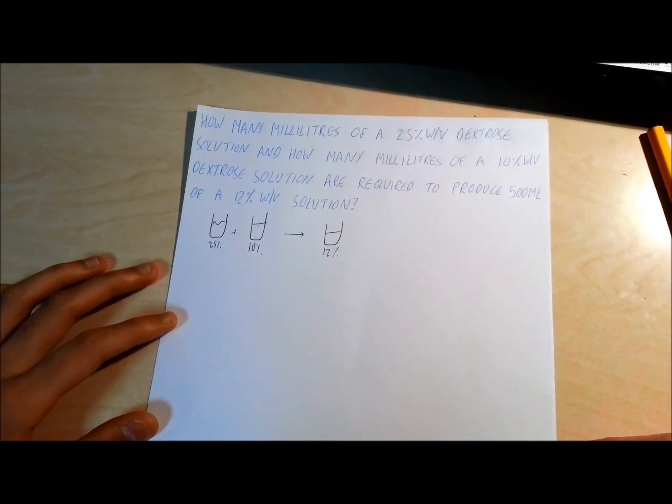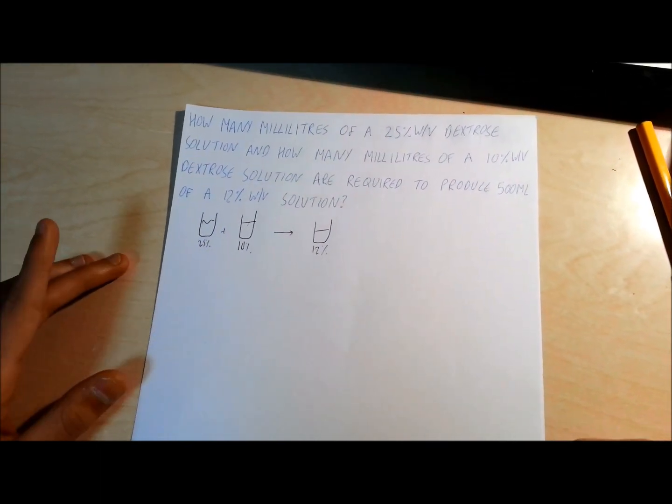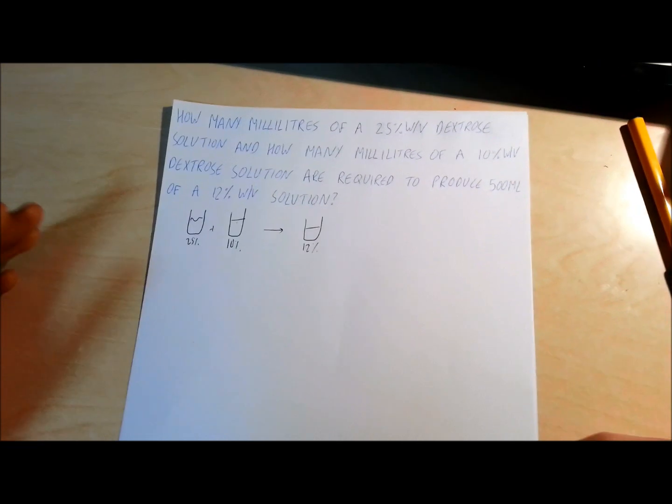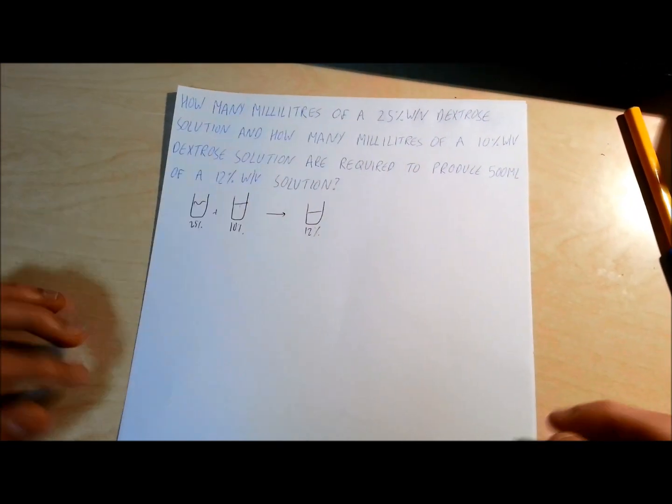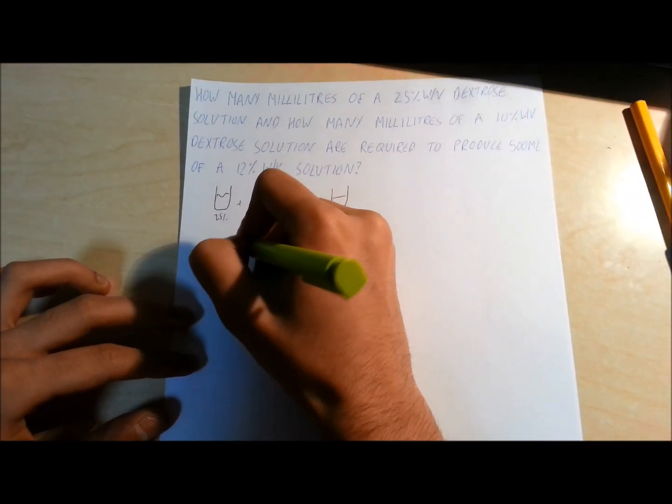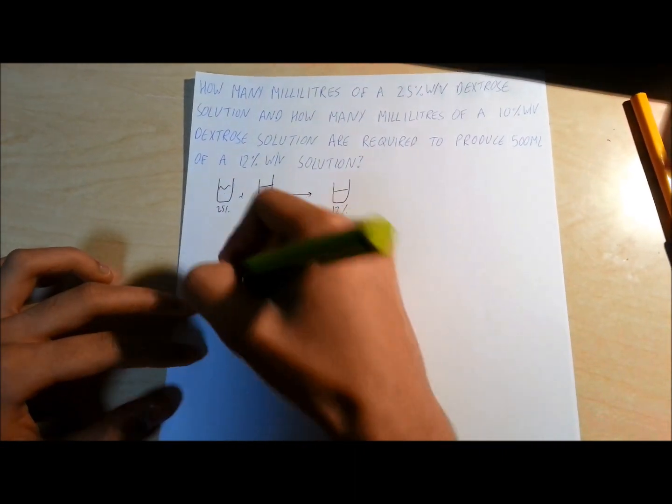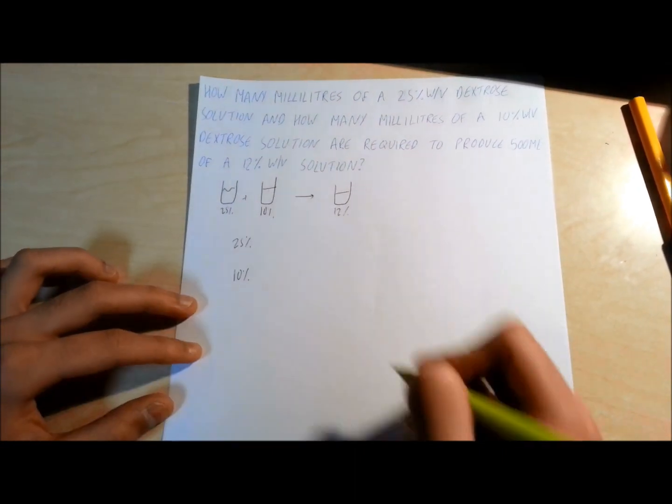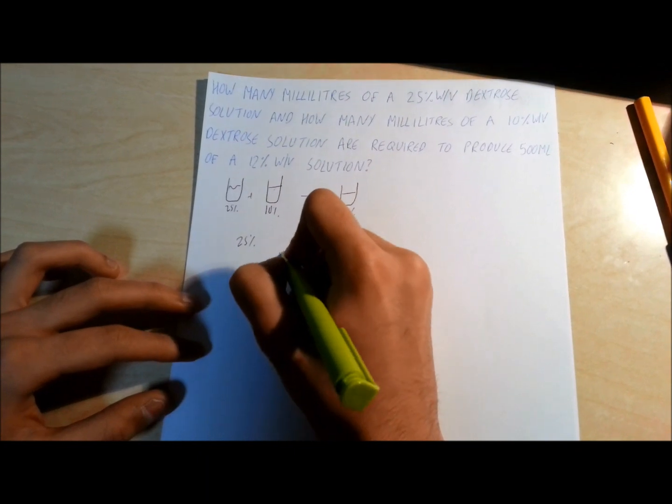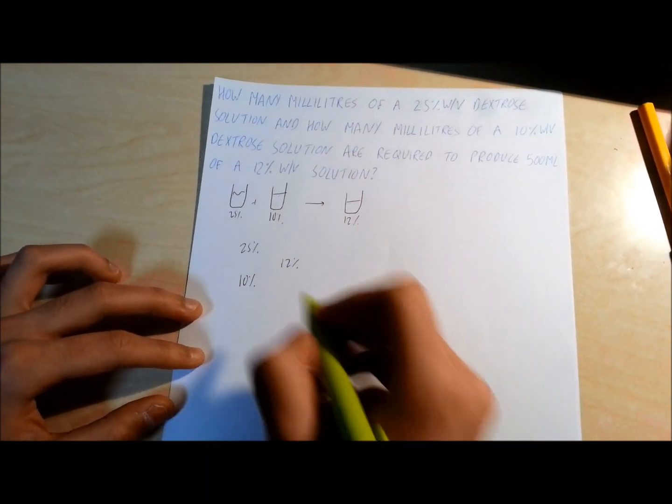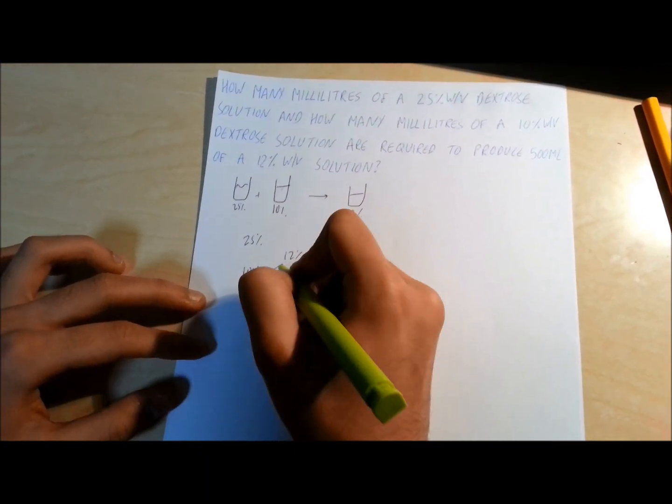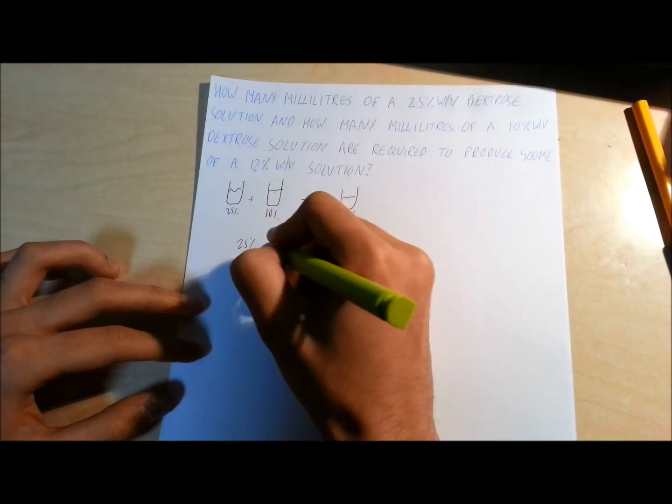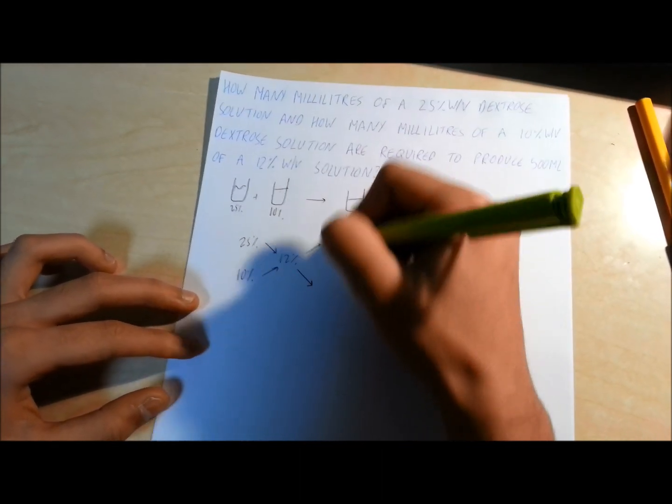So there are many ways to calculate this, but the easiest way is to do what we call the X method. You start off with your 25% solution and you have your 10% solution. And what you want is a 12% solution. So you use arrows in a cross-like formation, and you end up with a ratio.